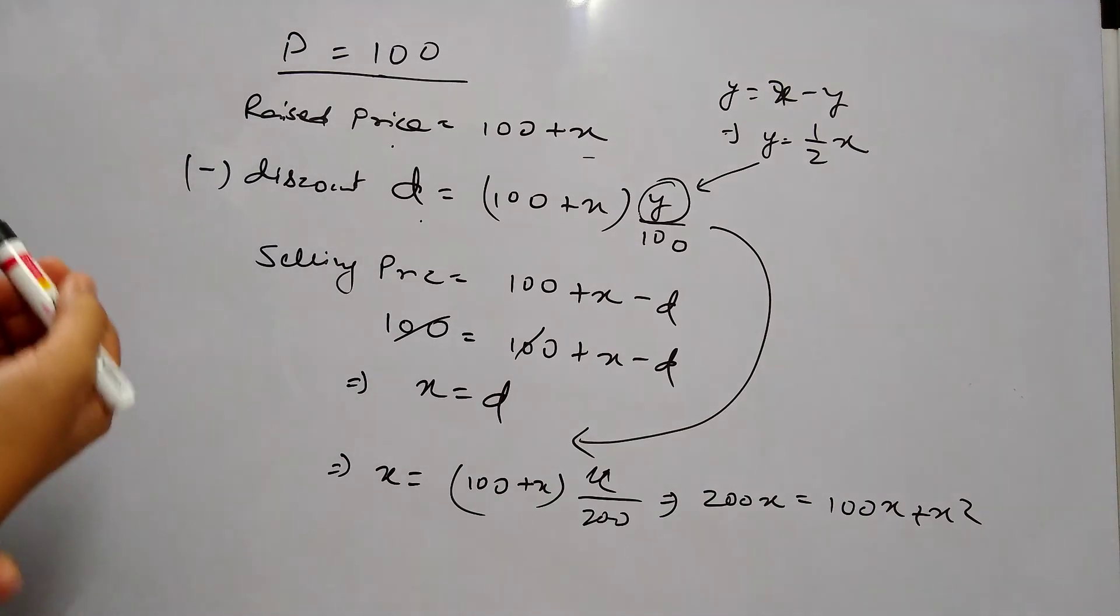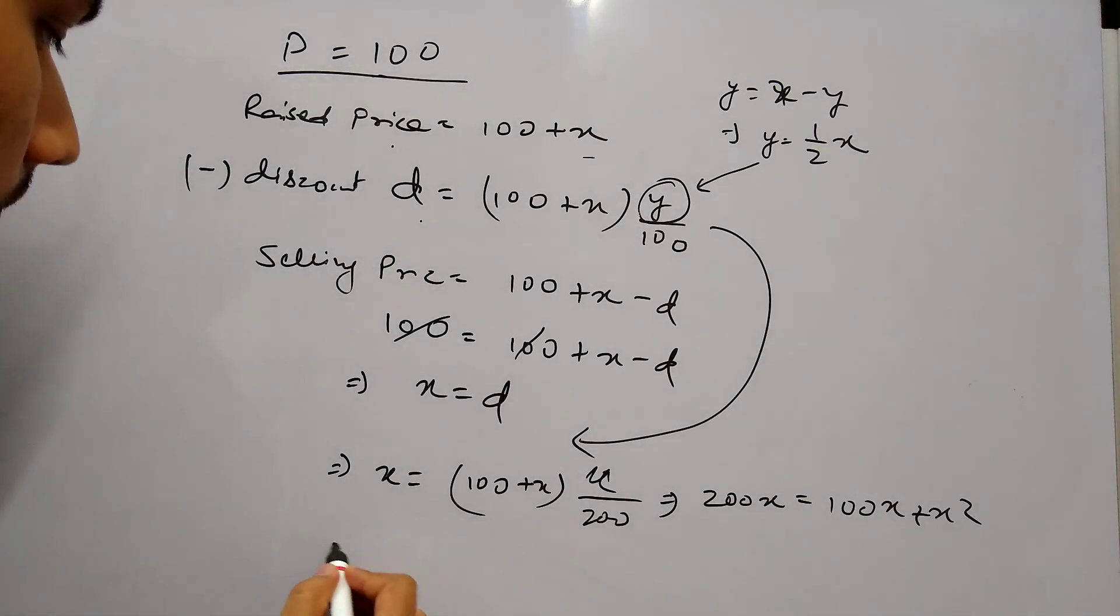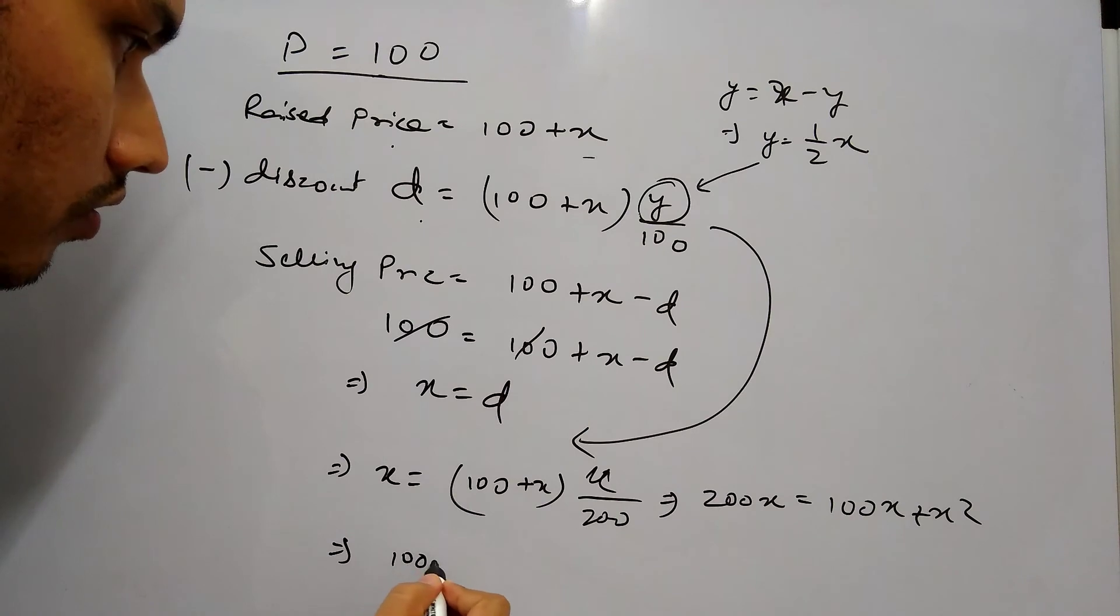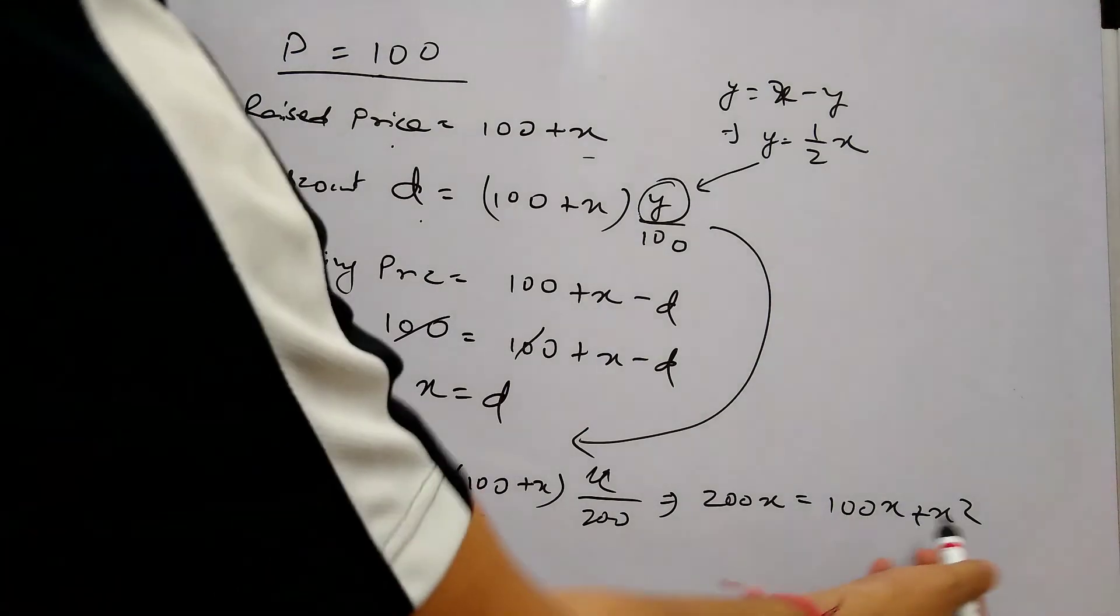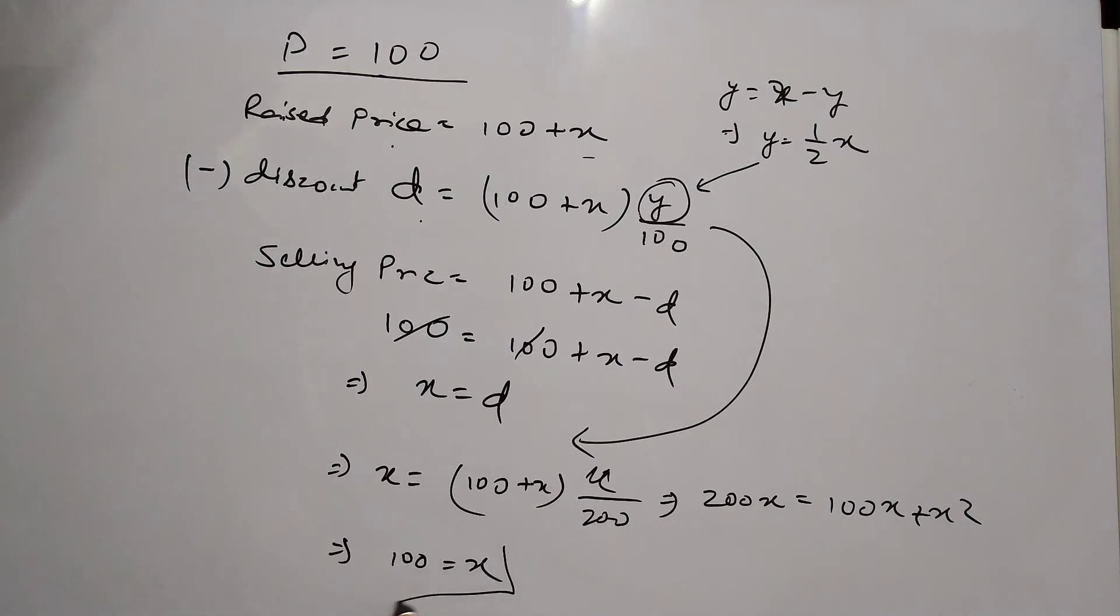So this will get cancelled. 100 equals to X. So this gives us 100 equals to X. So value of X is 100.